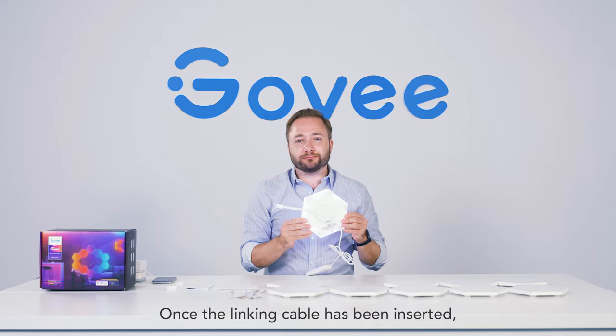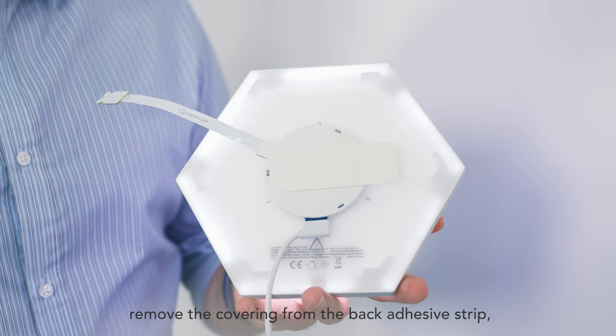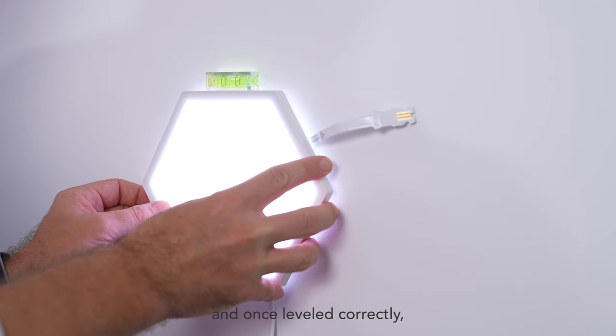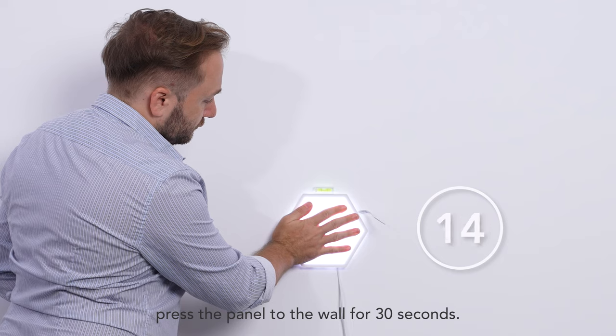Once the linking cable has been inserted, remove the covering from the back adhesive strip, place the mini level on the panel, and once leveled correctly, press the panel to the wall for 30 seconds.